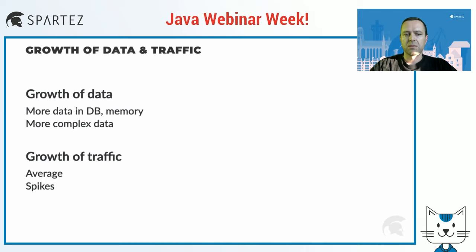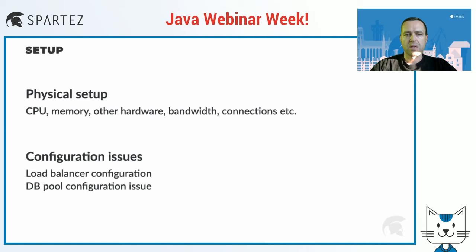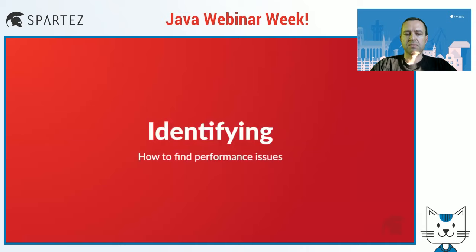Another thing is that with time, our customers grow — they have more users, more entries in the database, more data in memory, data gets more complex, and more users also mean more traffic on average, higher spikes, etc. If we don't improve our software, this causes performance degradation with time. The last category of problems I'd like to mention is setup — hardware like CPU, memory, bandwidth, connections, etc., but also configuration. Wrong load balancer configuration may cause serious performance issues. And if your application is database heavy, misconfiguring the database pool or using an incorrect one will have a dramatic impact.